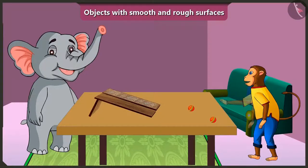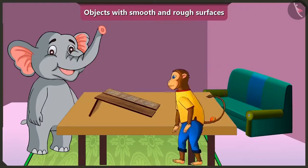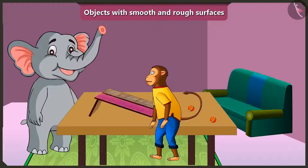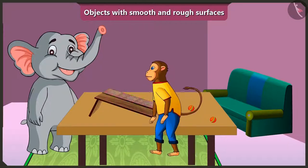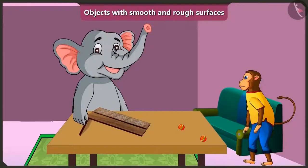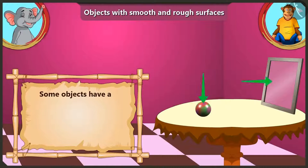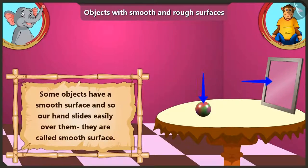Hey Appu, your balls are similar but the slopes of these wooden planks are not the same. Look at the surface of this slope - our hands slide smoothly and easily on things which have a smooth surface. We also call them smooth surfaced. My hand is sliding on this - its surface is very smooth. The surface of some things is smooth, so our hand easily slides on them. This is called a smooth surface.